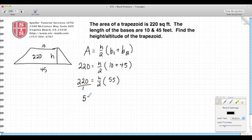Which is going to give me 55h. And on the other side, 220 times 2, which is going to give me 440.